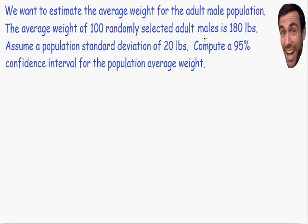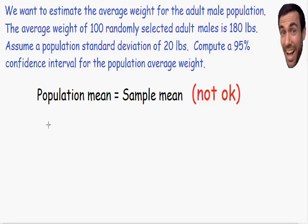Let's take a look at this example. The average weight of 100 randomly selected adult males is 180 pounds. It is not okay to assume that because the sample average is 180 pounds, the average for the entire adult population is also 180 pounds. This is not okay. It's not okay to assume that the population average, or the population mean, is equal to the sample mean.